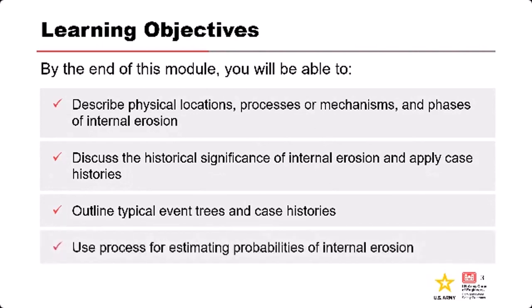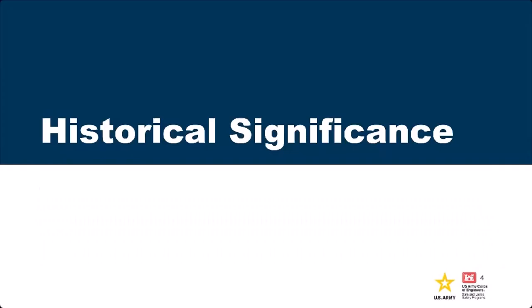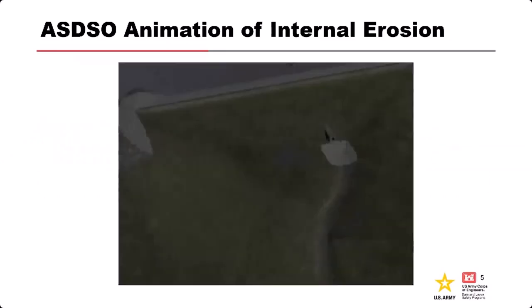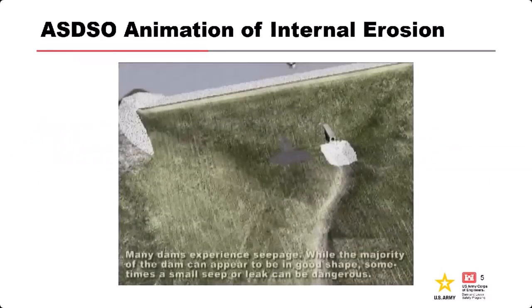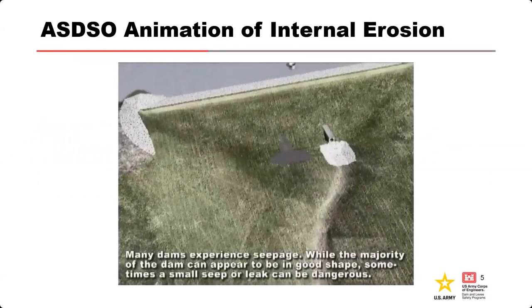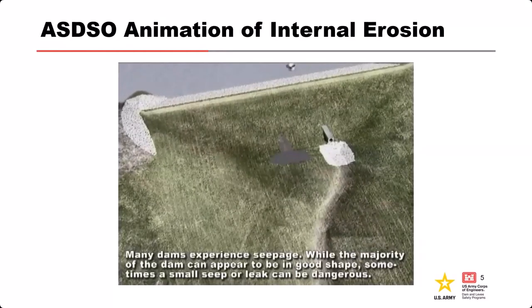We'll also outline typical event trees and some case histories, as well as the processes for estimating the probabilities of internal erosion. That's a lot of things — we're going to talk about the mechanisms, teach you about them in general, and give you a little bit of an approach for actually assessing risk. Let's get started with a little bit of historical significance, starting with a video.